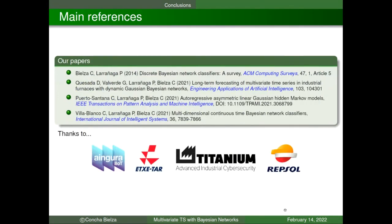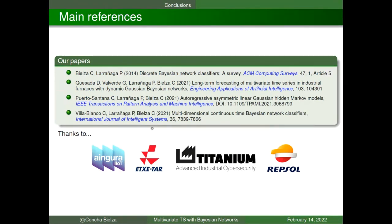In conclusion, we have seen different models for dynamic processes using Bayesian networks: explicitly representing dependencies, exploiting independencies, and providing interpretability. DBNs and HMMs handle continuous and discrete states in discrete time; CTBNs work in continuous time. Further topics include missing data, feature selection, semi-parametric Bayesian networks, non-exponential time duration distributions, mixing discrete and continuous time, non-stationary networks, and including decisions as in Markov decision processes or POMDPs. Thank you to the companies that provided data and problems.